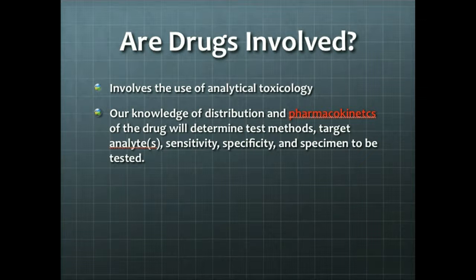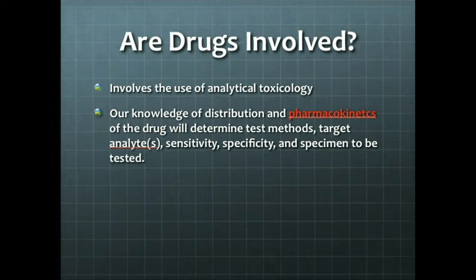Analytical toxicology is the science of chemical or physical tests for drugs and poisons. Our knowledge of distribution and pharmacokinetics of the drug will determine the test methods that we're going to use. Target analytes will be determined by the knowledge of distribution and pharmacokinetics, as well as sensitivity, specificity, and even the specimen type to be tested.